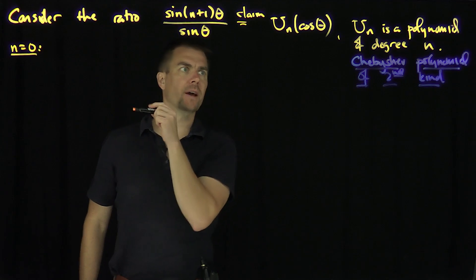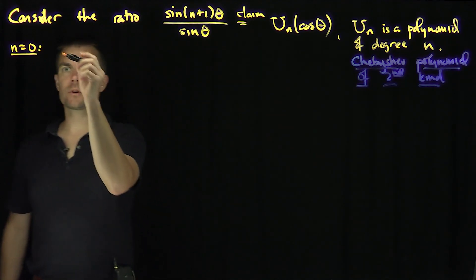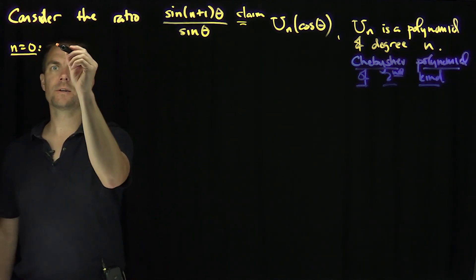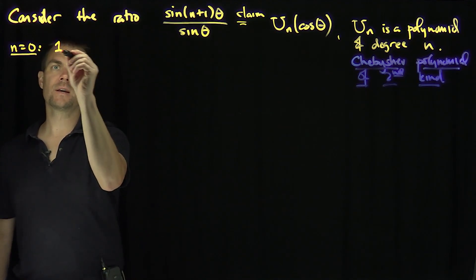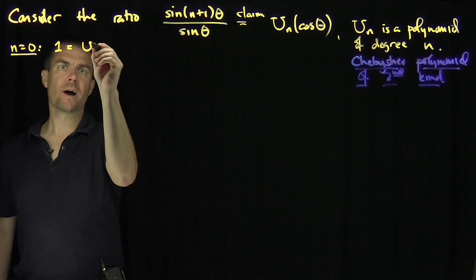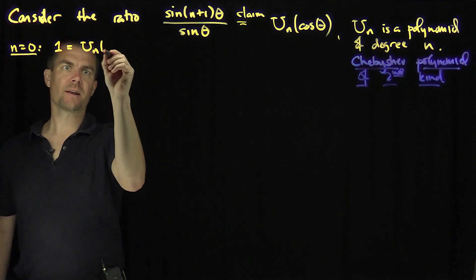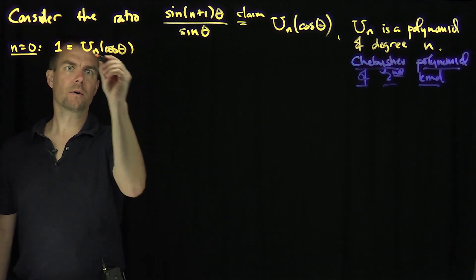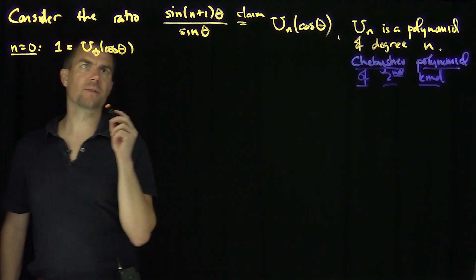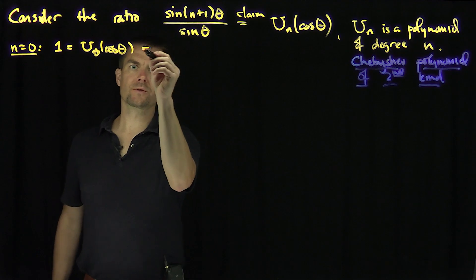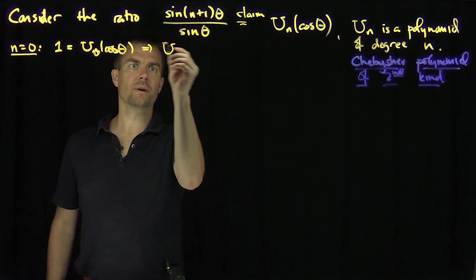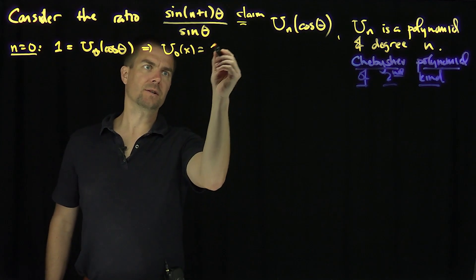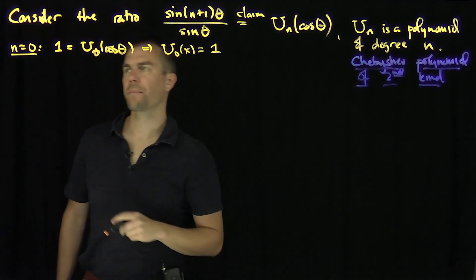We get sine of θ over sine of θ, so that expression equals 1. So we get 1 is equal to U₀ of cosine θ, and of course that's just going to be identical to 1, so U₀(x) = 1.